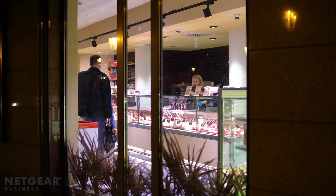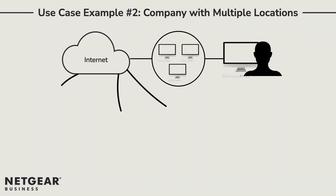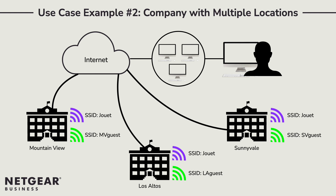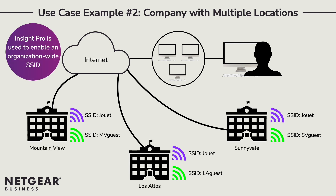Use case number two is a company called the Jouet Cafe, which is spread across multiple locations. Each location is small, requiring only one SSID for employees and another one for guest access. Because it is spread across multiple locations, Insight Pro is used to enable an organisation-wide SSID, which allows the SSID to be propagated throughout the entire company network and then broadcast at each location. Each location then creates its own guest SSID with a captive portal which can display promotional messages tailored to each location.